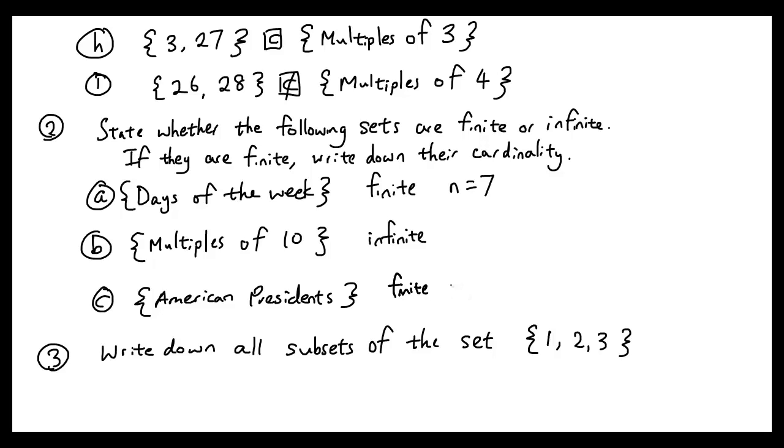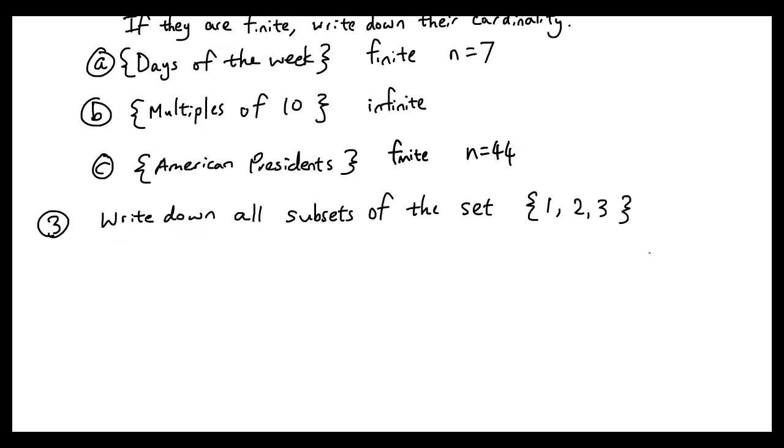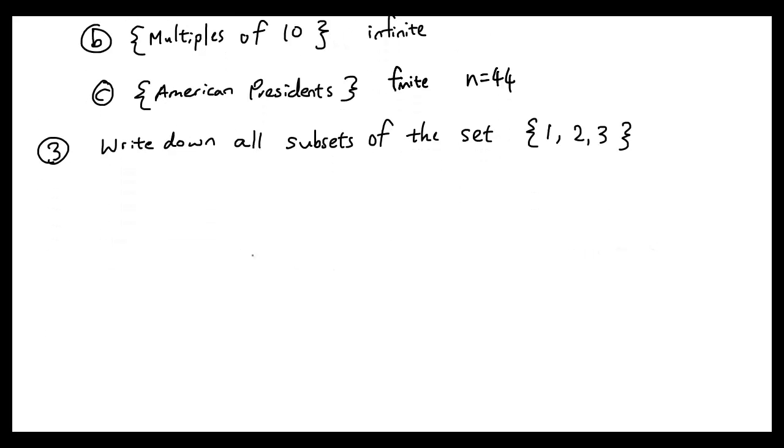Question 3: write down all the subsets of the set {1, 2, 3}. So the subsets—well, obviously we start with the empty set, and we also have all three elements together. So both of these are subsets of this set.